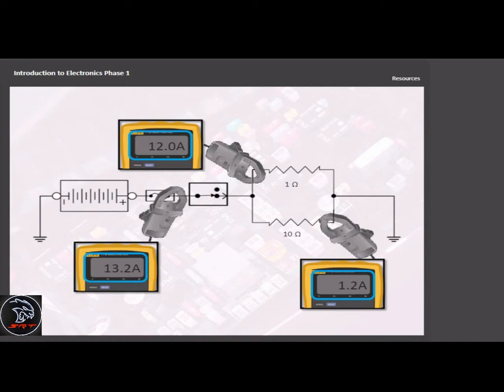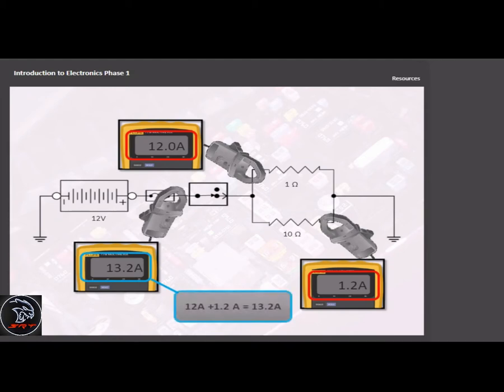Current in each branch is determined by the load in the branch. Current in the main trunk is equal to the sum of the current flowing through all of the branches. Current in the main trunk is called total circuit current.